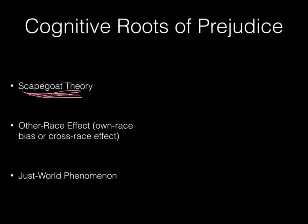The other race effect — which has three different names you might see on the AP exam: other race effect, own race bias, or cross race effect — means that you're so in tune with your own group or race that you can easily tell people of your own race apart when looking at them physically. But when looking at other groups, they all look the same. There have been numerous studies on identifying faces showing that when you look at a particular ethnic group you're not as familiar with, you might think they look very similar.